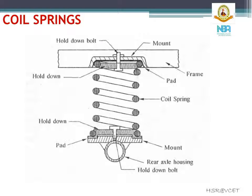Coil springs are used mainly with independent suspension, though they have also been used in conventional rigid axle suspension as they can be well accommodated in restricted spaces. The energy stored per unit volume is almost double in case of coil springs compared to leaf springs. Coil springs do not have noise problems, nor do they have static friction causing harshness of the ride as in leaf springs. However, coil springs cannot take torque reaction and side thrust, for which alternative arrangements have to be provided. Sometimes a helper coil spring can be used to provide progressive stiffness against increasing load.